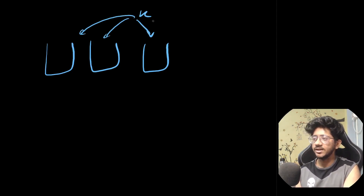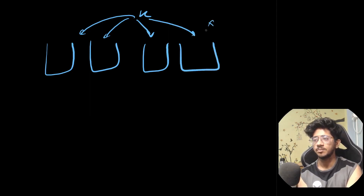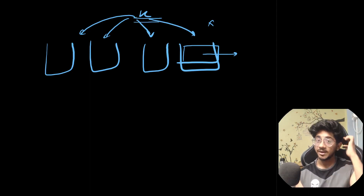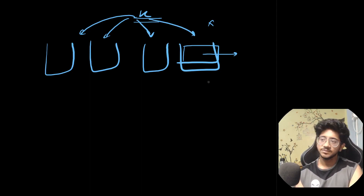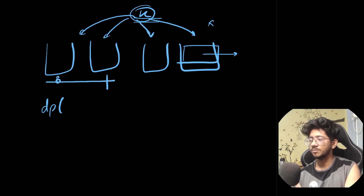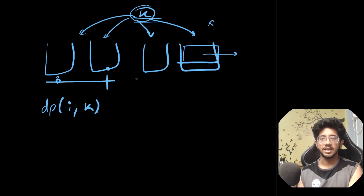As soon as I see this problem — piles where we need to decide how to distribute K — if you decide to take X coins from a pile, you directly know the top X will be taken, calculable via prefix sum. The question is just how you distribute X across piles. This is one of the standard knapsack-style problems, and that's what we're going to use.